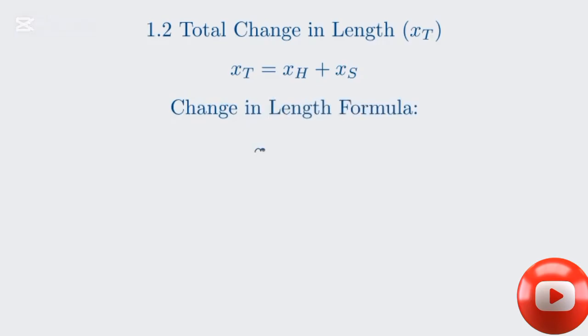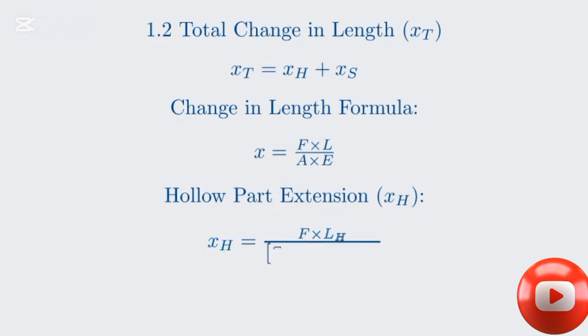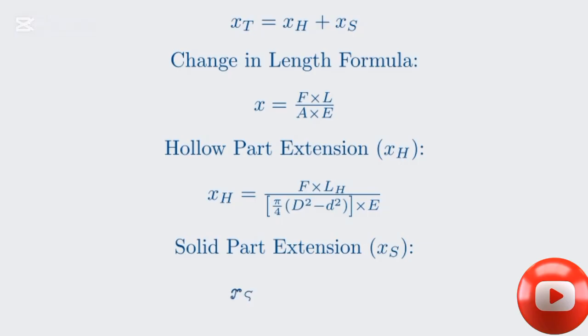The change in length, x, is equal to the product of force F and length L, divided by the product of cross-sectional area A and the modulus of elasticity E. Substituting the specific area formulas we used before, we can write the extension for the hollow part as F times LH over the quantity pi over 4 times D squared minus d squared, all times E. Similarly, the extension for the solid part is F times LS over the quantity pi over 4 times d squared, all times E.